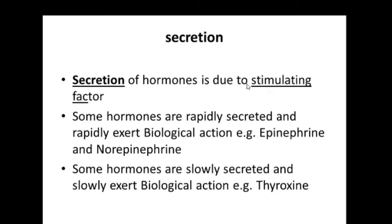Stimulating factors can either be a molecule, like glucose or an amino acid — these can stimulate hormone secretion. It can also be a psychic factor, like anxiety, stress, mental stress, or sleep deprivation. All these are factors that can stimulate hormone secretion. The opposite of stimulation is inhibition. Stimulating factors and inhibiting factors are both important in regulating hormone secretion.